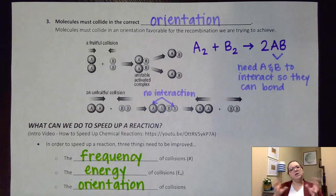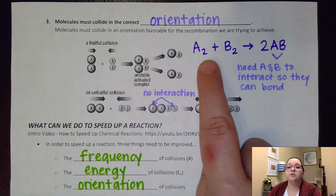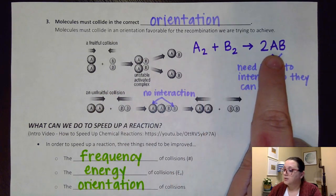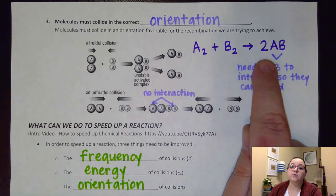If they don't collide in such a way to interact with each other, then I'm not going to end up producing product. So for example, this particular picture is actually trying to show this reaction right here: diatomic A and diatomic B making two molecules of AB.